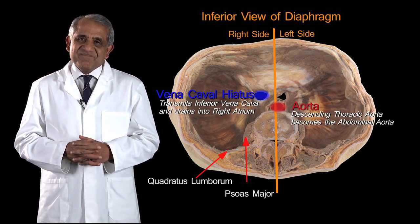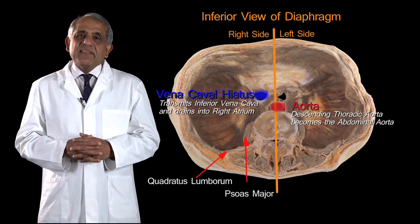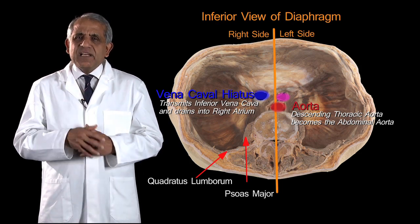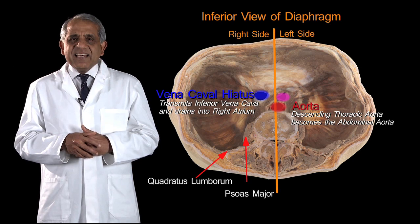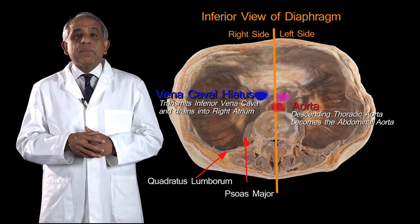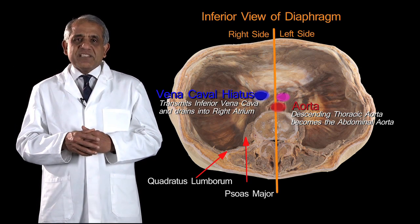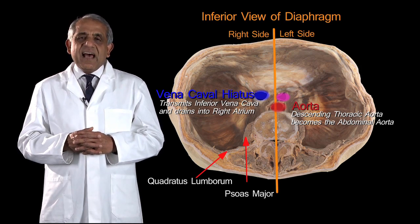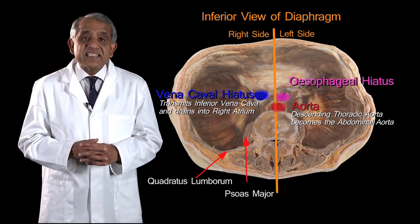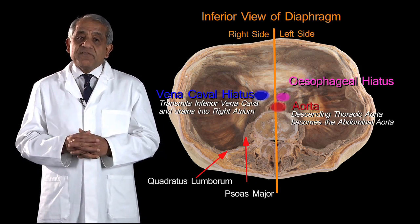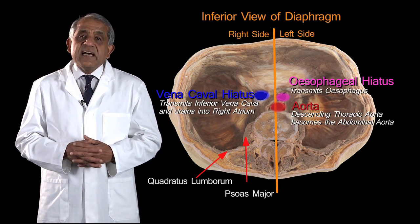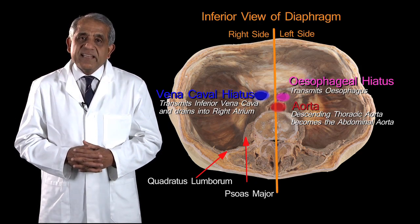The third of the three major openings is slightly to the left of the midline. It's through the muscular portion of the diaphragm, behind the central tendon portion, and this opening is called the esophageal hiatus because it transmits the esophagus along with the vessels and nerves that accompany it.